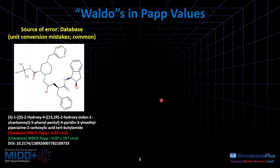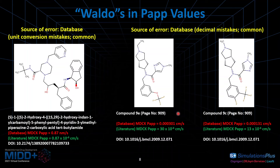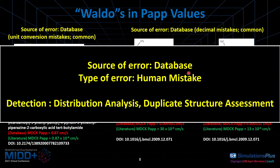Here are some more examples with mistakes in the PAPP values that are more subtle and harder to detect. For example, this structure is reported to have a PAPP value of 0.87 nanometers per second in the database, but when we actually look at the literature, the value is 0.87 micro centimeters per second — the difference is subtle. Another compound is reported by the database to have 0.000301 centimeters per second, but in literature it is 30 micro centimeters per second — this is more of a decimal mistake. These mistakes related to decimal and unit conversion are very common and harder to track, but we can still track them down using distribution analysis by manually checking compounds near the end of the distribution spectrum.